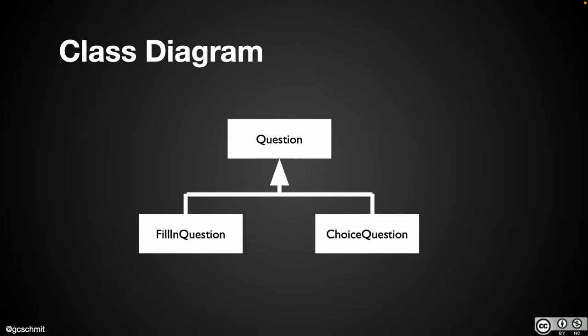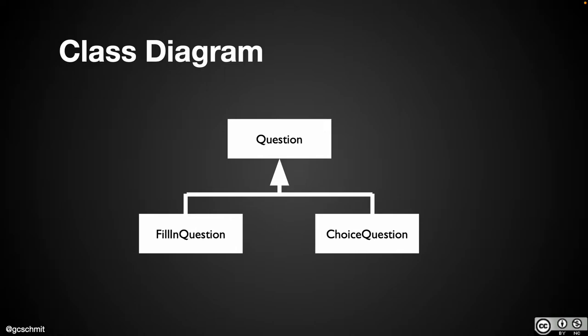Here's an example we're going to use throughout the beginning of this unit. We're going to write code to create a class hierarchy related to questions in some testing software. This is a UML design class diagram — what's new is that instead of just lines connecting our classes, we now have a triangle pointing at the Question class. That triangle describes the is-a relationship: a FillInQuestion is a Question, and a ChoiceQuestion is a Question — meaning Question is the superclass and FillInQuestion and ChoiceQuestion are our subclasses.